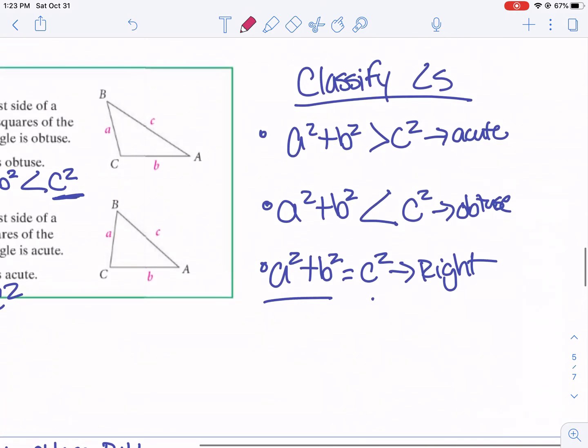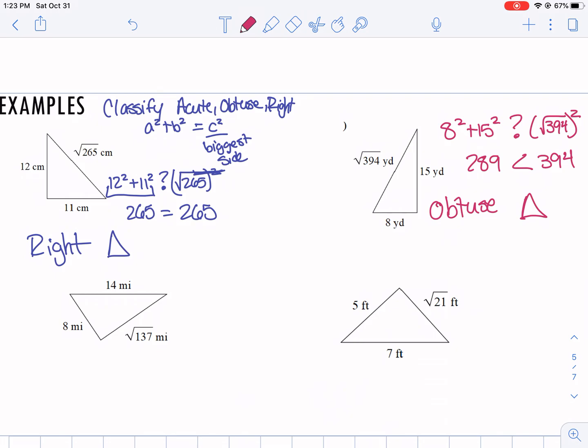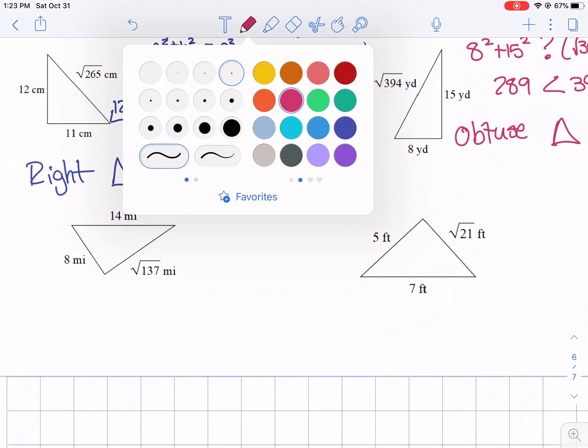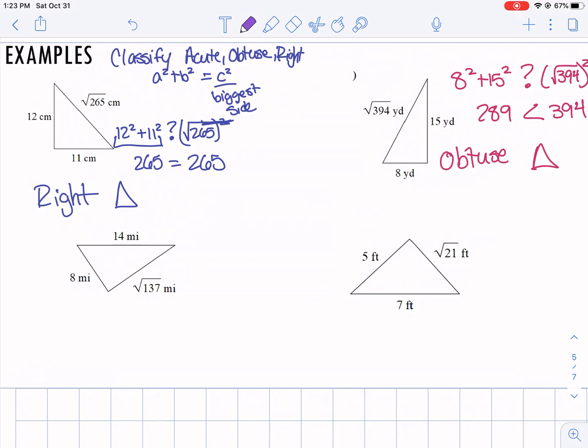So 8 squared plus 15 squared is 289, and that's less than 394. So when c squared was bigger, it was an obtuse triangle. So they purposely are drawn to look right, but like we talked about in class, you can't assume things. So that's where we're using this classifying to help us. If you want to pause the video and try these next two examples on your own and then check it, that would be a good idea.